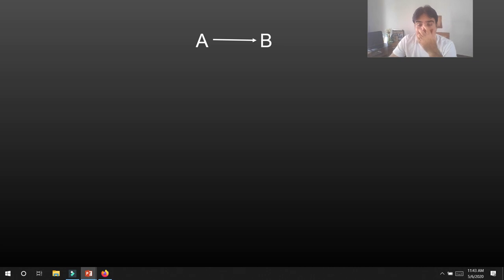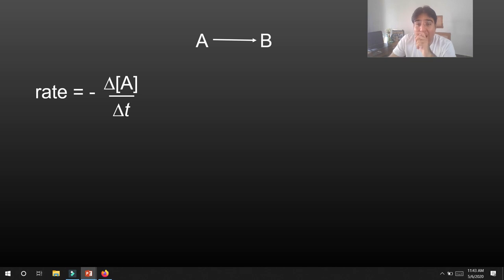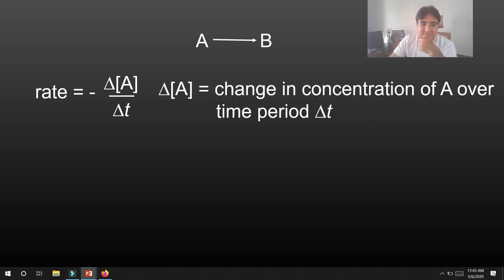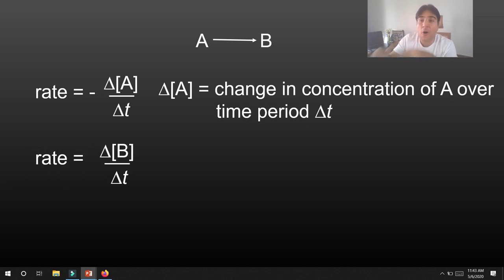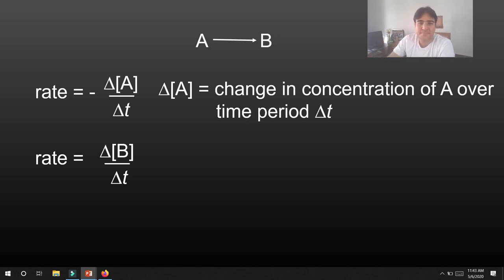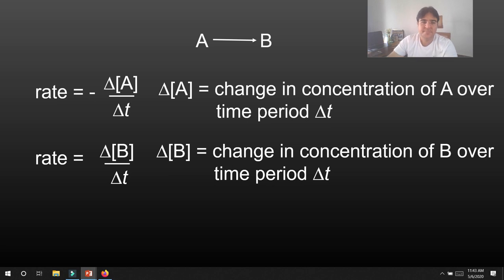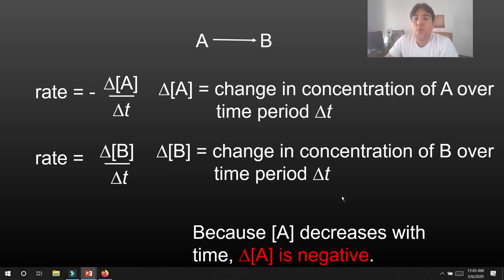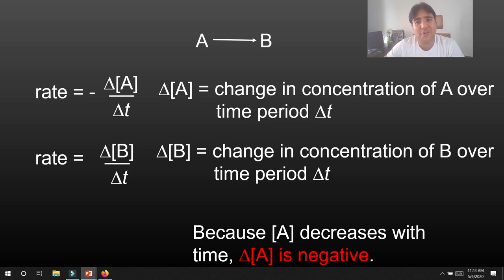For a reaction A → B: the rate of disappearance of A is written as −ΔA/Δt (with a minus sign because A is decreasing), and the rate of appearance of B is +ΔB/Δt. Both rates are equal because A is converting into B — at the rate A breaks down, B forms at the same rate.